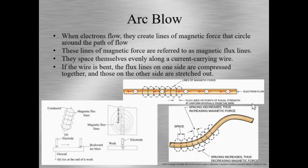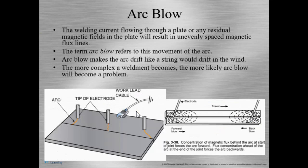Now we're going to talk about arc blow. When welding, our electrode creates lines of magnetism that wrap around the electrode and swirl down it. The plate or part we're welding also has a certain amount of electrons and magnetism flowing through it. When the magnetism of the electrode and the magnetism of the plate interact, there can be arc blow — where the arc is wandering around and not focused where the electrode is placed. Smaller plates tend not to have issues with arc blow, but with longer and more complex weldments, arc blow can be a big deal.